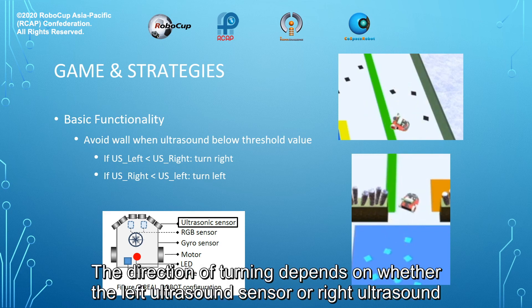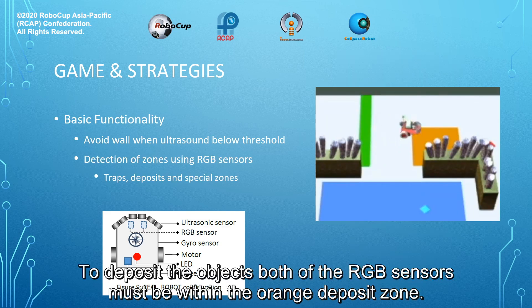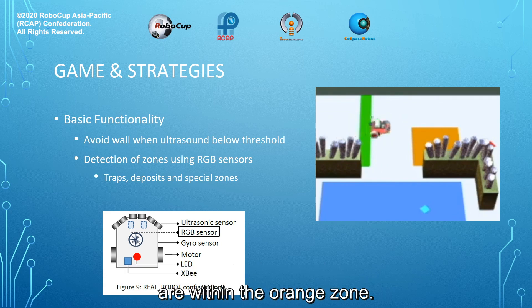The direction of turning depends on whether the left ultrasound sensor or right ultrasound sensor is closer to the wall. To deposit the objects, both of the RGB sensors must be within the orange deposit zone. If it happens that only one sensor detects orange, the robot will turn until both sensors are within the orange zone.